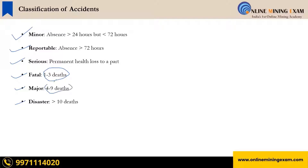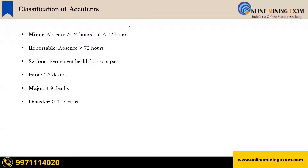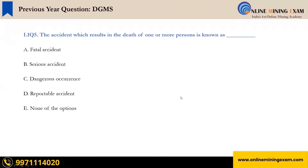When 4 to 9 deaths take place, that is called a major accident. And when there are more than 10 deaths, then that is called a disaster. So these are the basic definitions, and I am sure you all are aware of them.